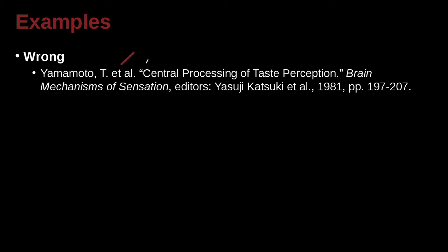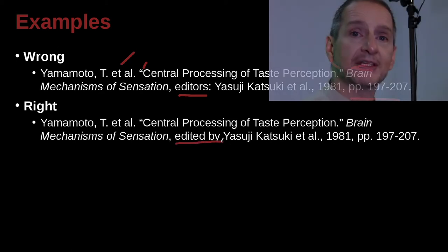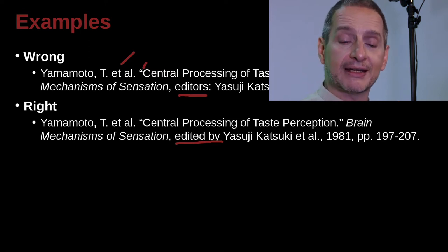Damamoto, T. et al. — so we must have three or more authors. The chapter 'Central Processing of Taste Perception' is inside of a book called Brain Mechanisms of Sensation, which has editors and came out in 1981. These are the pages of the chapter we're citing. But the correct way to write the editor credit is 'edited by' — MLA is very clear that it wants you to write 'edited by,' not just 'edited.'